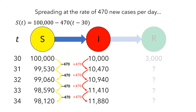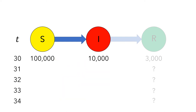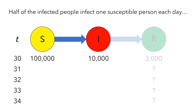This scenario wasn't particularly realistic because as the number of infected people grows, we'd expect the disease to spread more rapidly. So let's think about a slightly different scenario. What if half of the infected people each infect one susceptible person each day? How many susceptible people would there be on day 34? Pause the video and think about how you would figure this out.